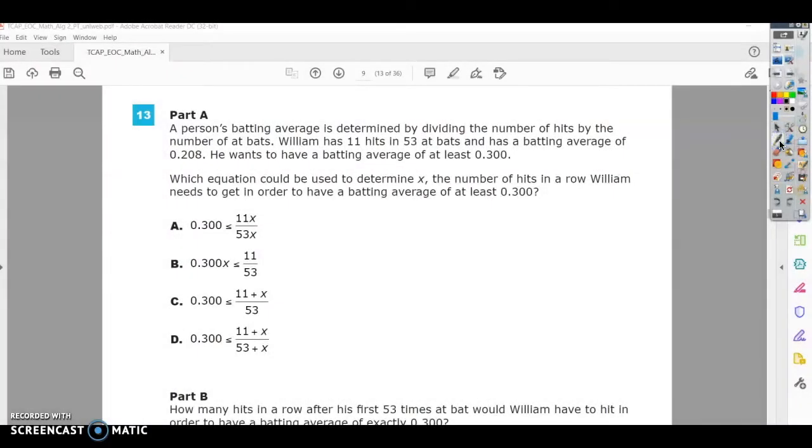Number 13 on the EOC Algebra 2 practice test. A person's batting average is determined by dividing the number of hits by the number of at-bats. William has 11 hits in 53 at-bats and has a batting average of 0.208. He wants to have a batting average of at least 0.3. Which equation could be used to determine X, the number of hits in a row William needs to get in order to have a batting average of at least 0.3?